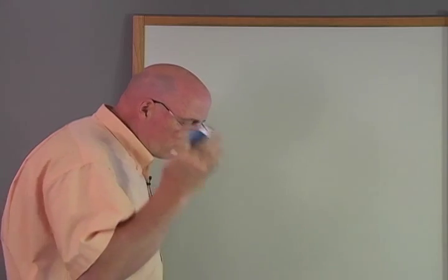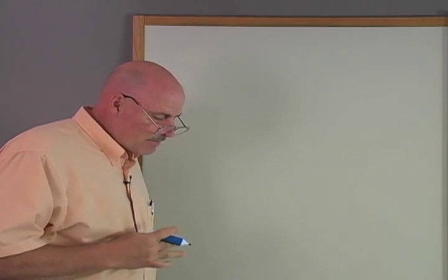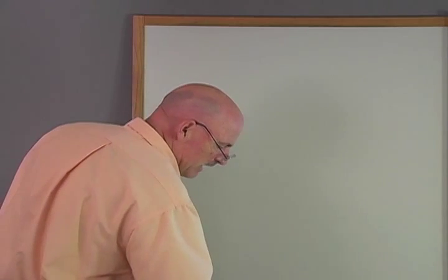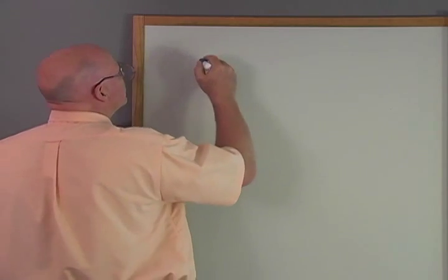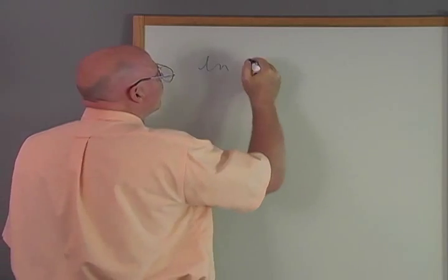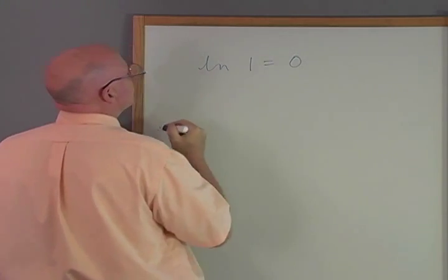So we're going to have seven, what I'm going to call logarithm rules here. I'm going to list them and go through them. And we're going to use the natural logarithm of 1 equals 0. This is our first one.